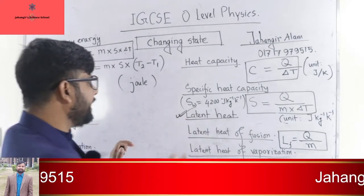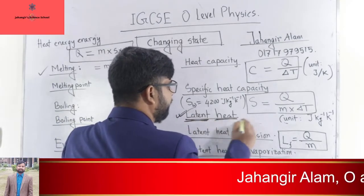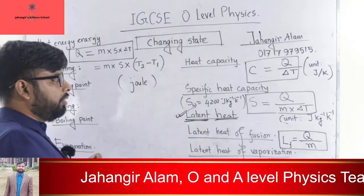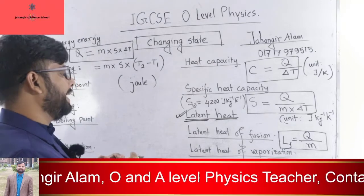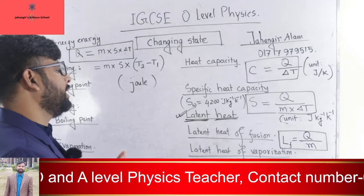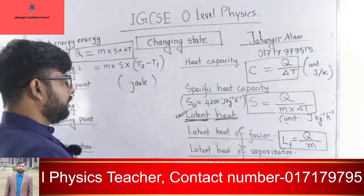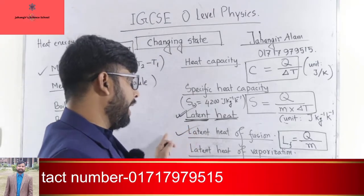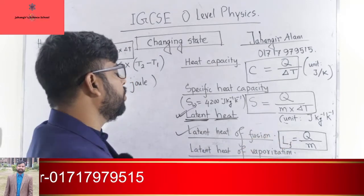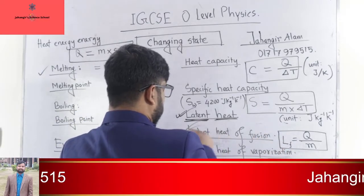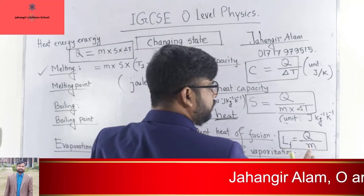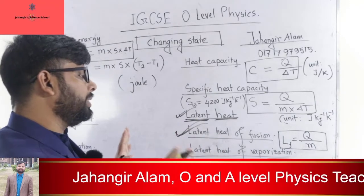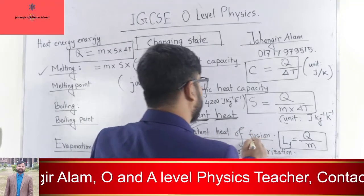Now, latent heat. Latent means hidden; heat means thermal energy. Latent heat is the amount of thermal energy required to change the state of a substance without changing its temperature. Latent heat of fusion is the amount of heat energy required per unit mass to change a substance from its solid state to liquid state without changing its temperature — that means at the melting point.